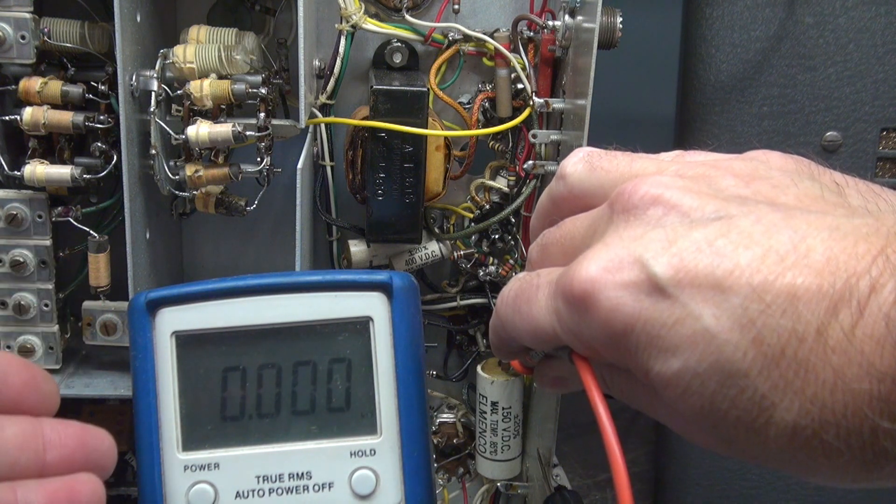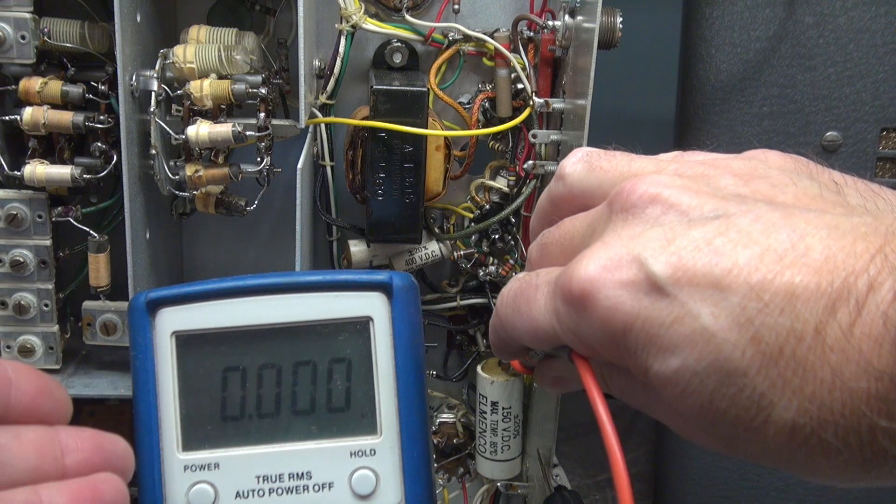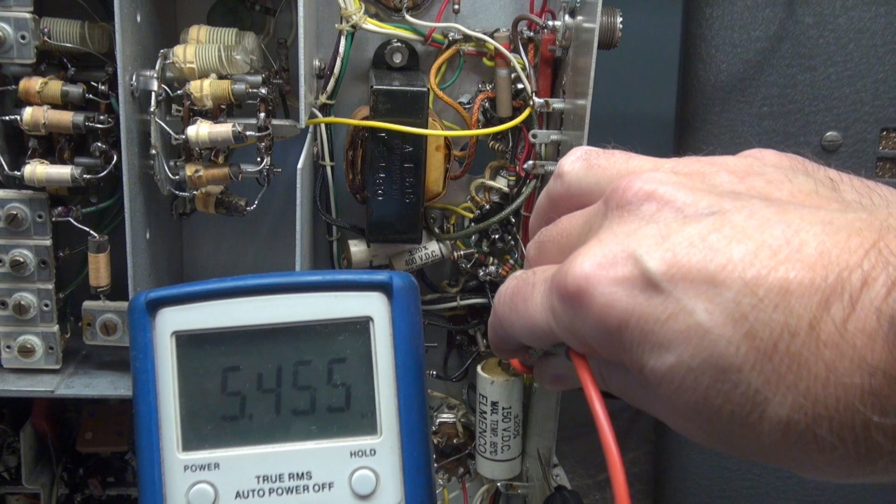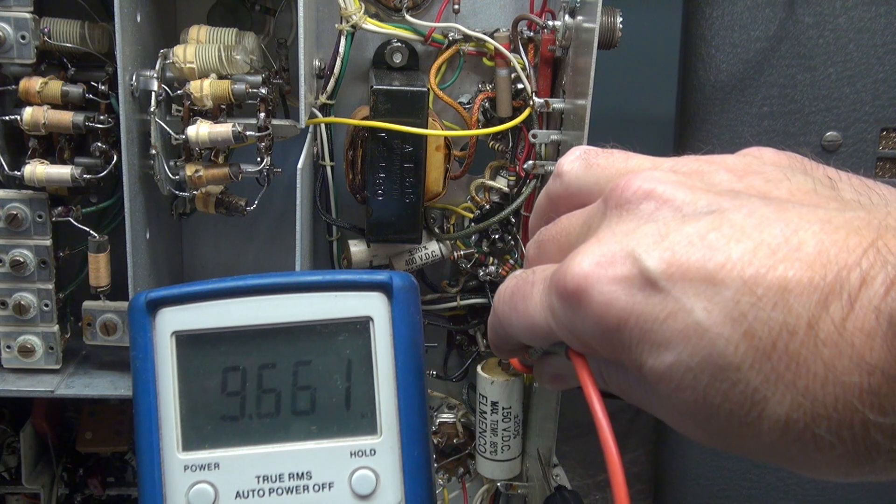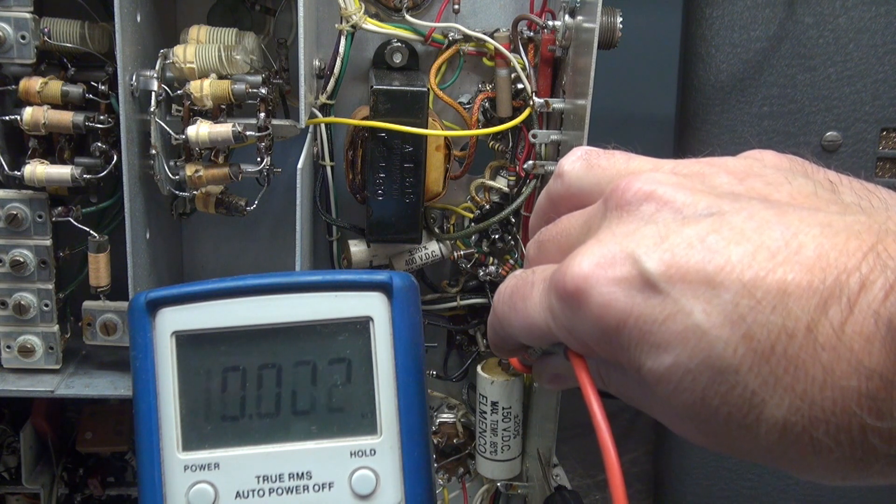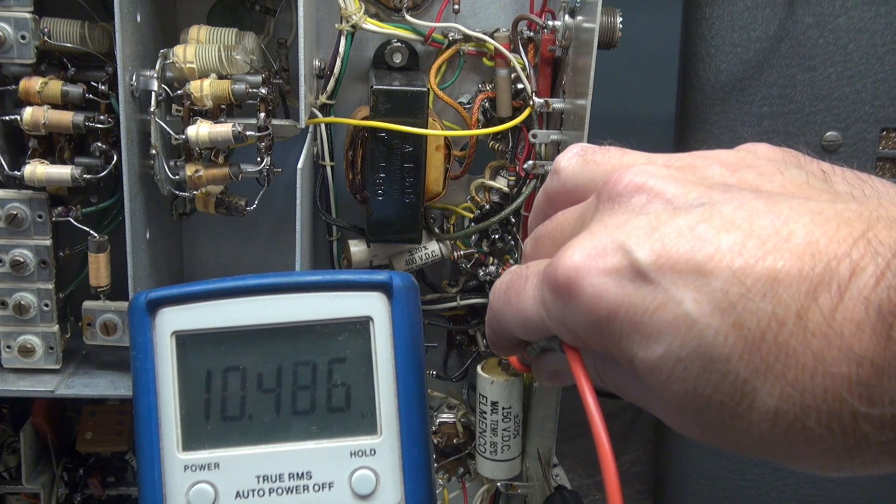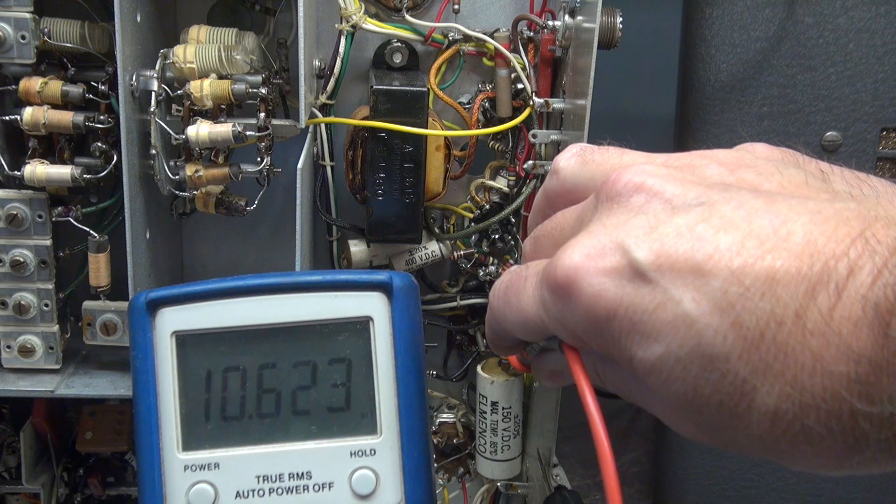I'm in receive, so we should see continuity to ground. Now, let's go to transmit. Look at there. I'm on the 20k scale. We're seeing our 10k resistor. All right, let's power it up and see if it's muting properly now.